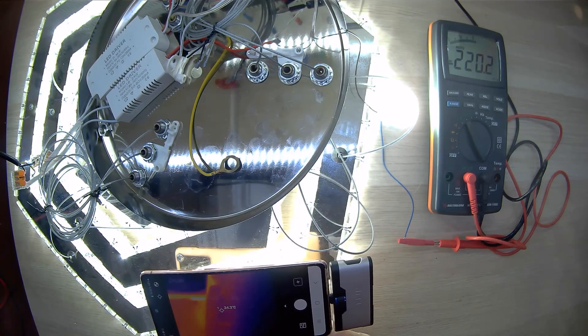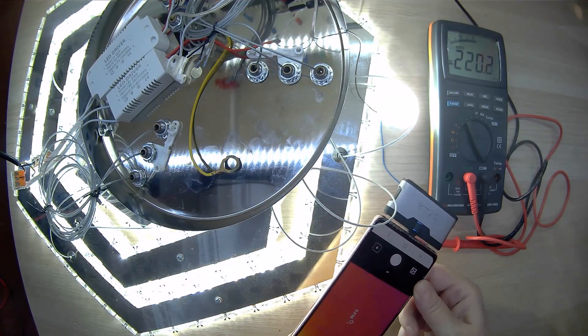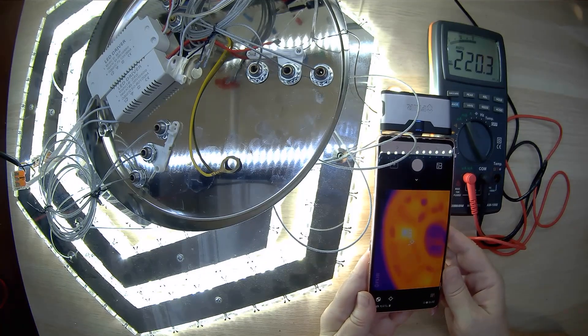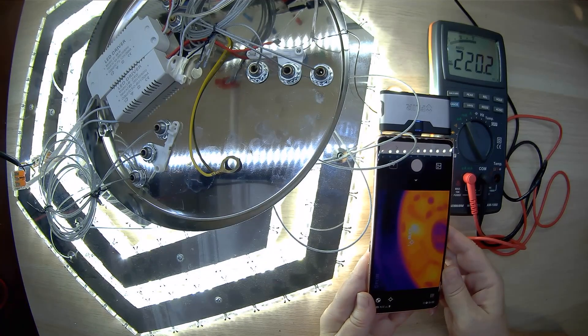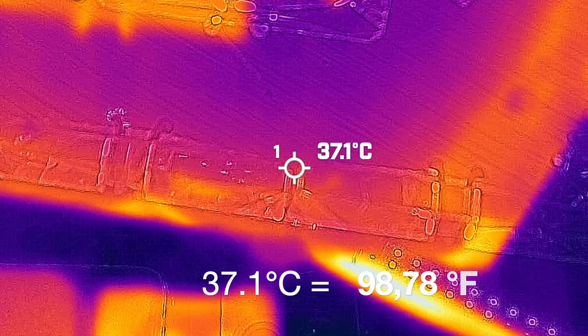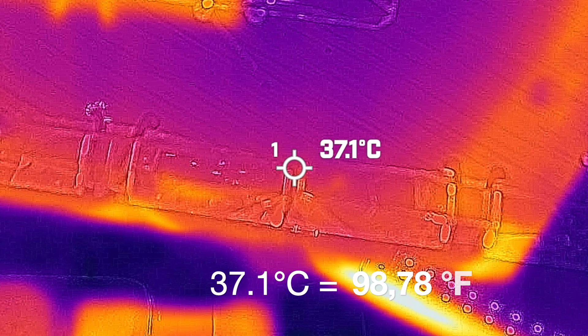Now, we will test the temperature of the LED chandelier. At the same time, we measure the current in the circuit. The current is 220mA. We see that LEDs of all sections of the chandelier operate at a temperature of about 35 degrees.